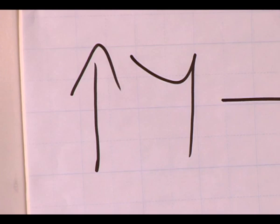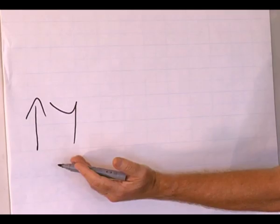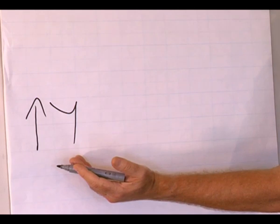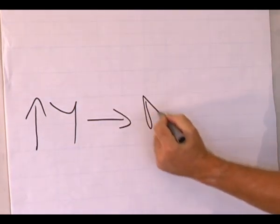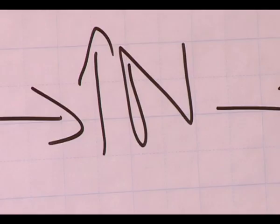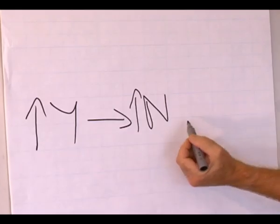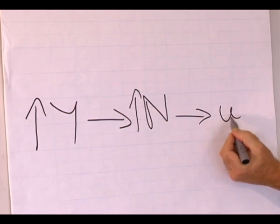In other words, we're going to produce more goods and services. In order to produce more goods and services, we need to employ more people. So employment will increase. If employment increases, then unemployment will decrease.